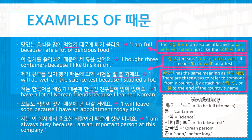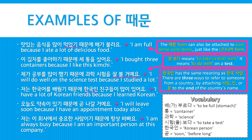So here are some more examples. 마시는 음식을 많이 먹었기 때문에 배가 불러요 — 'I am full because I ate a lot of delicious food.' Note that this 때문 form can also be attached to past tense verb stems, just like the 니까 form. 이 김치를 좋아하기 때문에 세 통을 샀어요 — 'I bought three containers because I like this 김치.' 제가 공부를 많이 했기 때문에 과학 시험을 잘 볼 거예요 — 'I will do well on the science test because I studied a lot.' 잘 보다 means to take a test well, so it means to do well on a test.